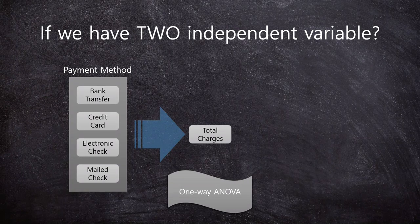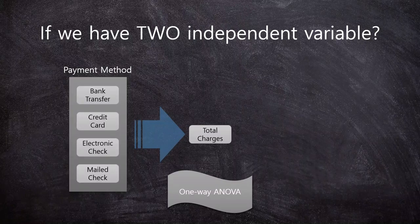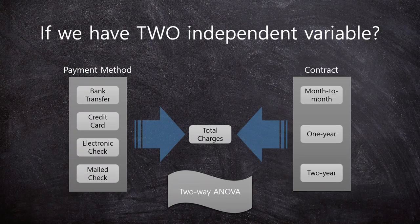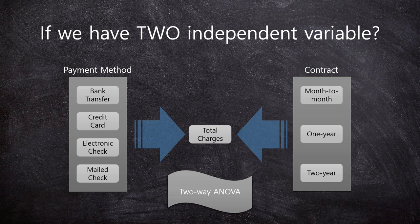We've learned the one-way ANOVA in prior series of videos. In the one-way ANOVA, there is only one independent variable, which was a payment method in the example. Now, our question is: what if we have two independent variables? As you can see here, now we have one more independent variable, which is the contract.